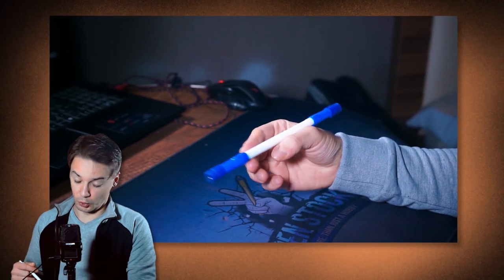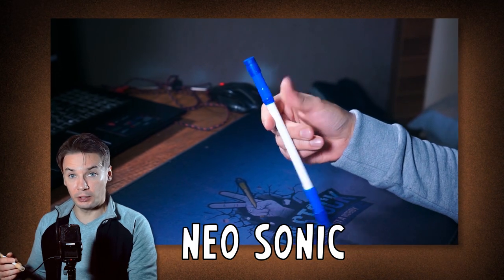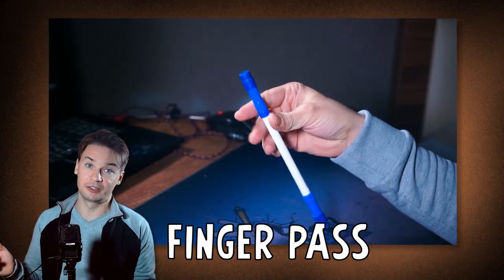The tricks used for this combo are half tap, tipped sonics, neo sonic, and there will be also one finger pass reverse. That's it, by just knowing these simple tricks you can already make pen spinning combos.